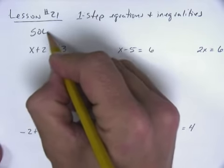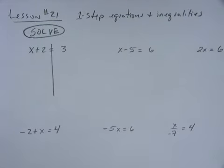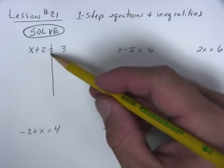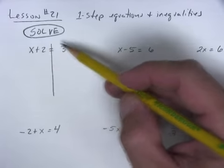The big word that we're going to use today is solve. Solve means this: it means I get x on one side and everything else on the other side. For example, I've got two sides to this equation. The left hand side has an x and a two, the right hand side has a three.